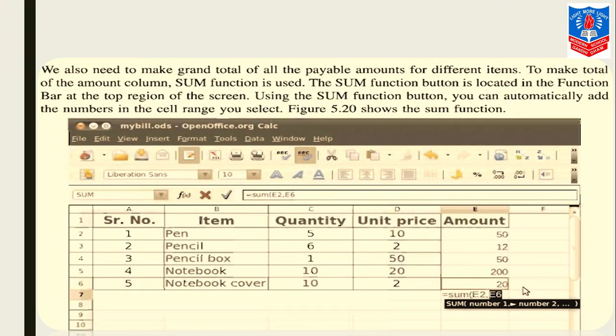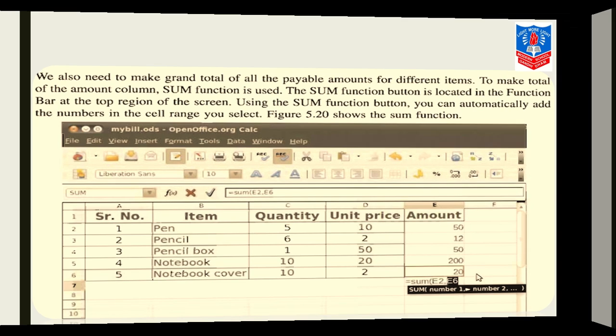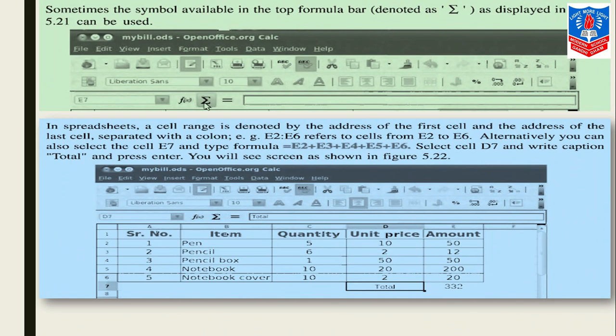Now we also need to make a grand total of all the payable amounts of different items. To make a total of the amount column, the sum function is used. The sum function button is located in the function bar at the top region of the screen. Using the sum function button, you can automatically add the numbers in the cell range you select. So here in this image, the sum function is to be used. Now we have calculated the total amount. Now to calculate the grand total, we're using the sum function: E2 to E6. Where we are writing the formula is equals to sum E2, then we are using a colon, E6. This is our formula.